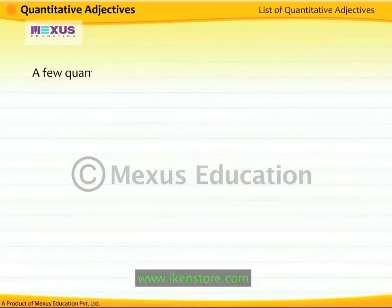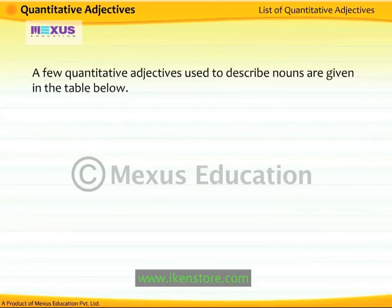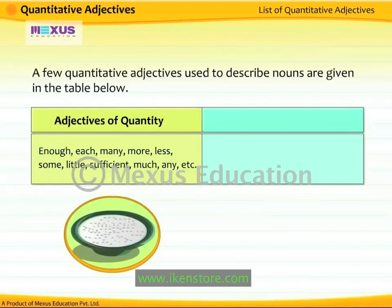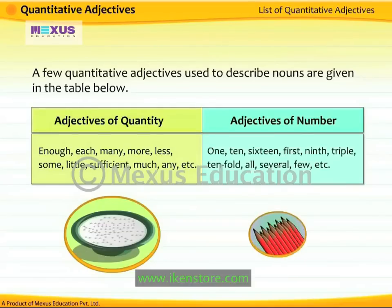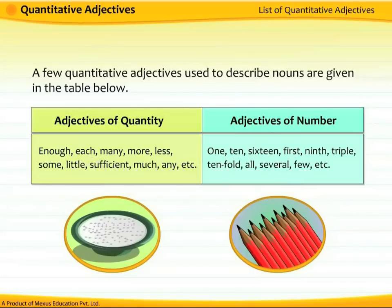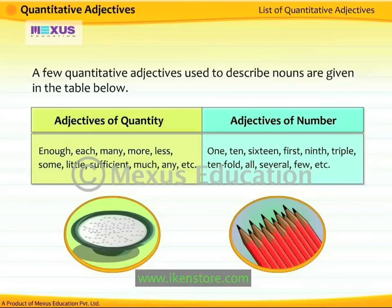A few quantitative adjectives used to describe nouns are given in the table. Those used to denote quantity include: enough, each, many, more, less, some, little, sufficient, much, any, etc. Those used to denote number include: one, ten, sixteen, first, ninth, triple, tenfold, all, several, few, etc.